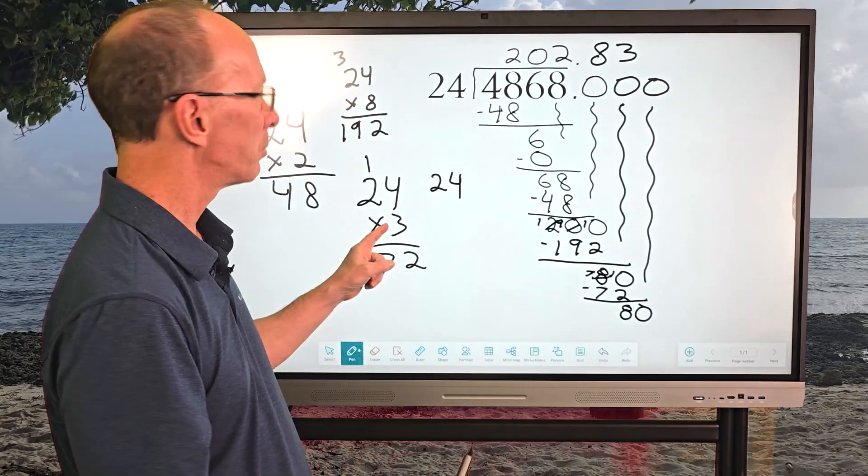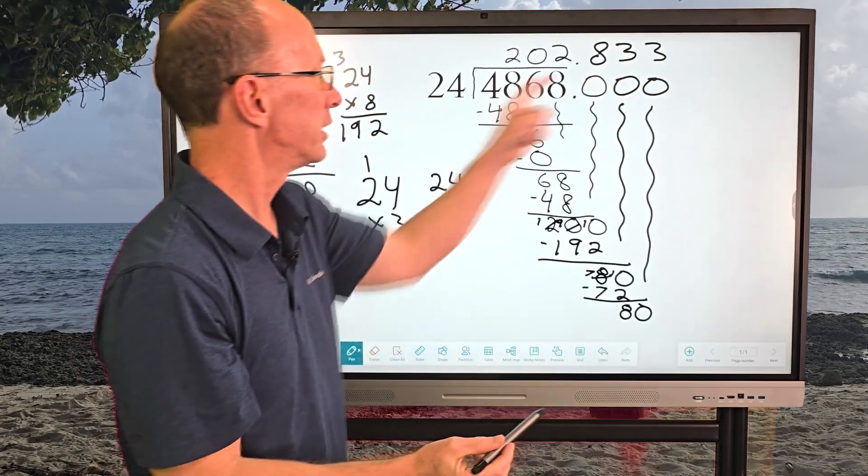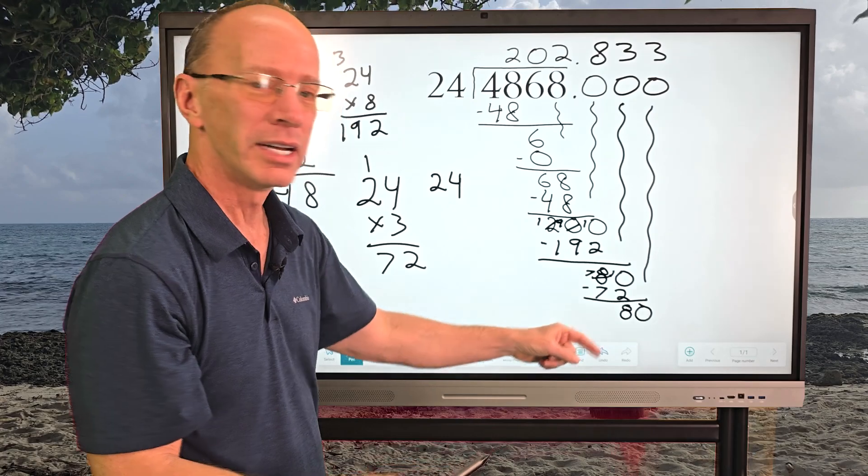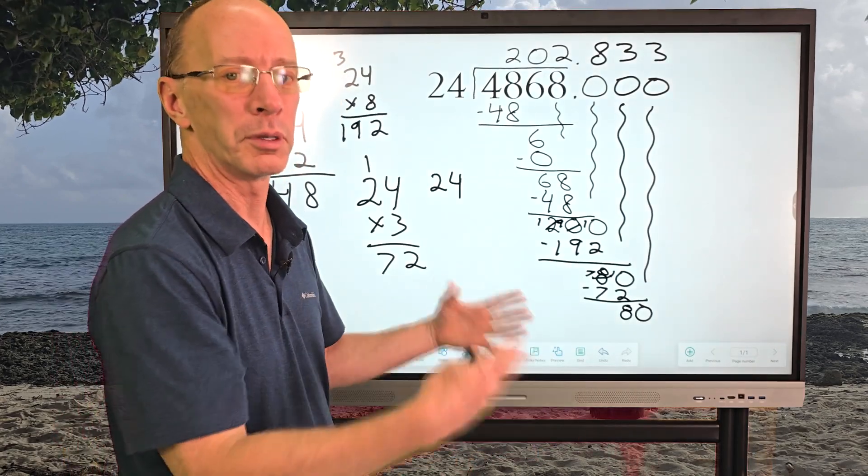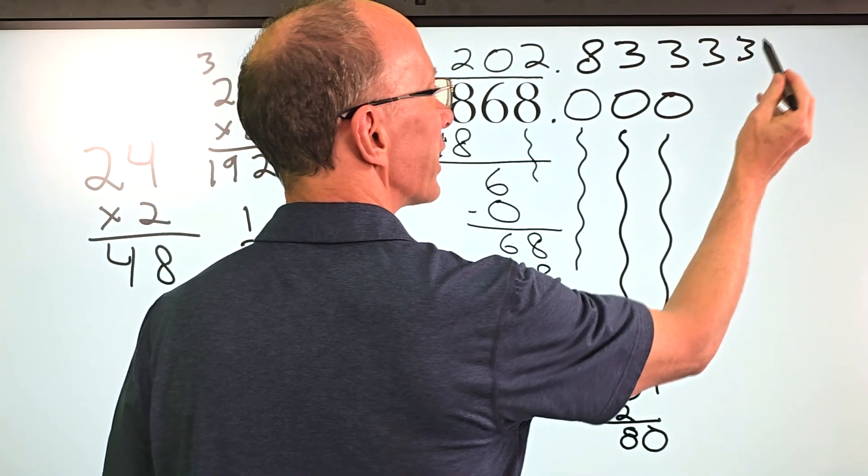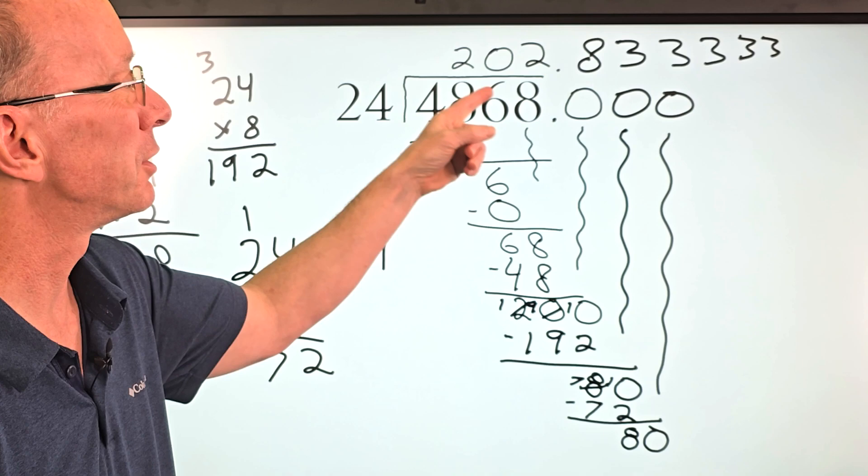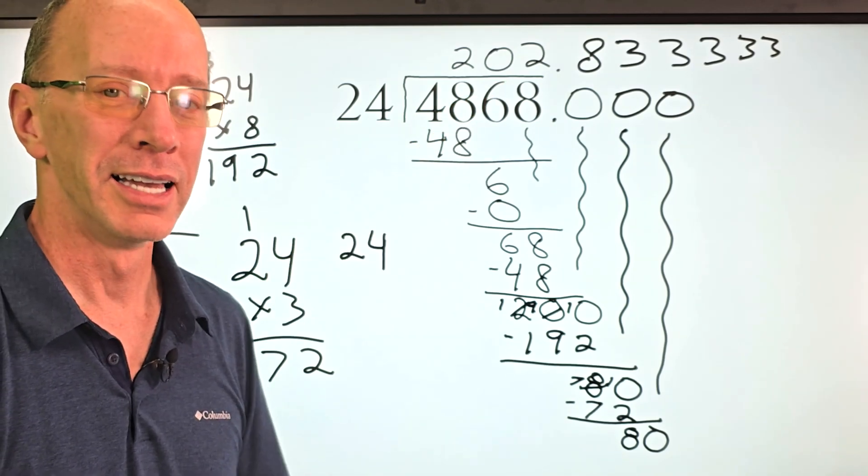And I would probably put a 3 right here. And then 3 times 24 would be 72. And this is just going to keep repeating and repeating and repeating. It'll just keep on going like that. So our answer basically is going to be 202.83. Take a look right there.